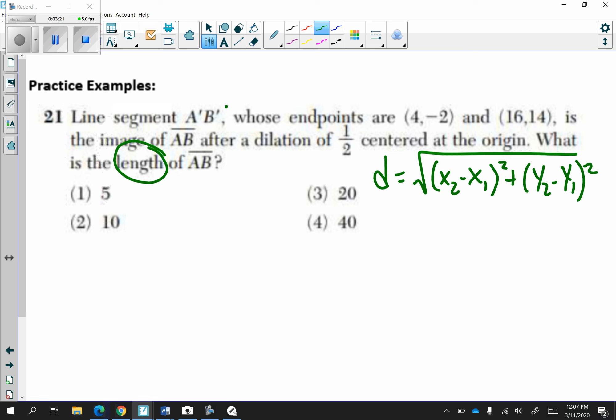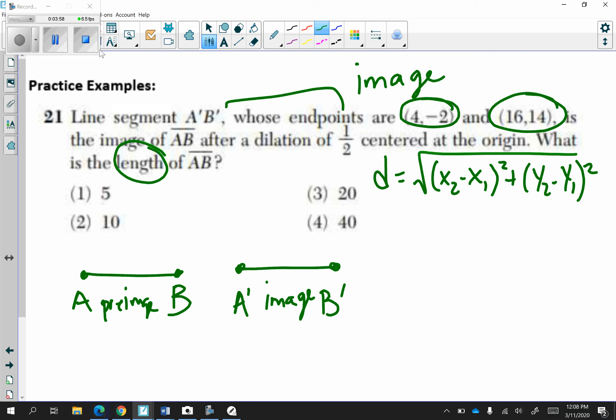Now, for this question, a prime, b prime are your image. So it's asking for the length of the pre-image. So this is my AB, which is my pre-image. And here's a prime, b prime, which is my image. Take a moment and find the distance using the points 4, negative 2, and 16, 14.